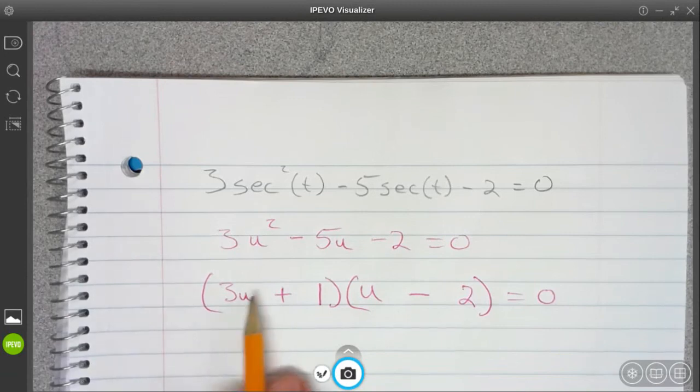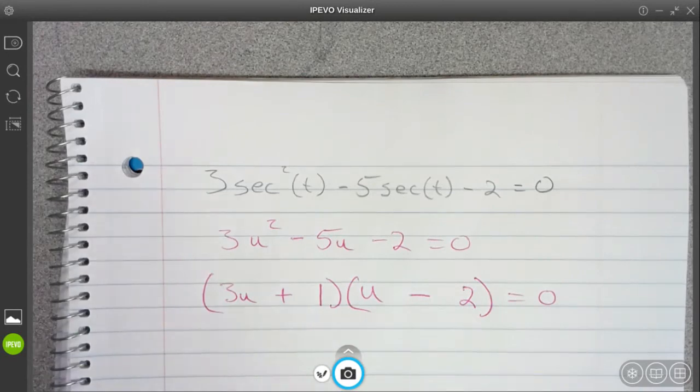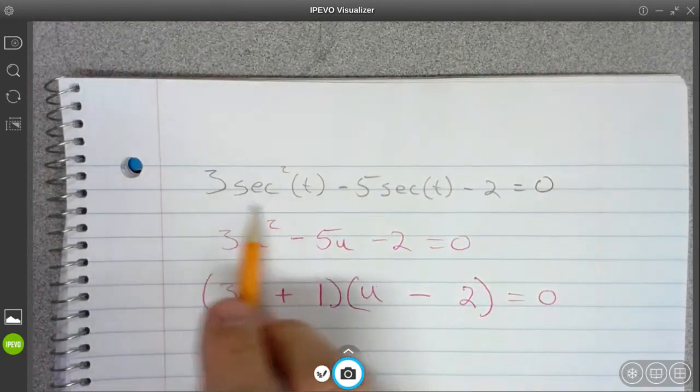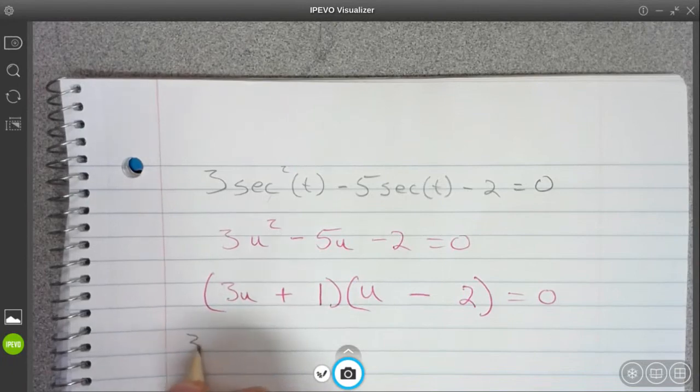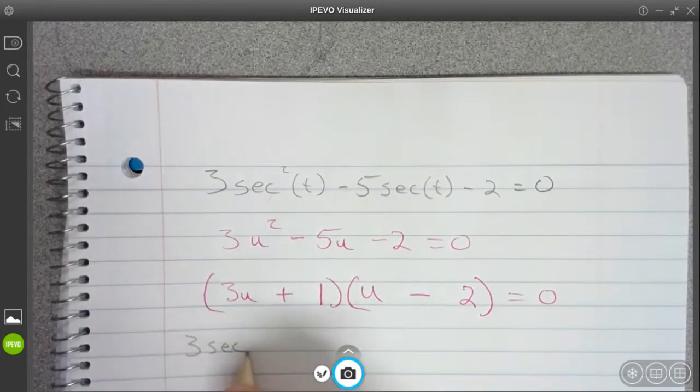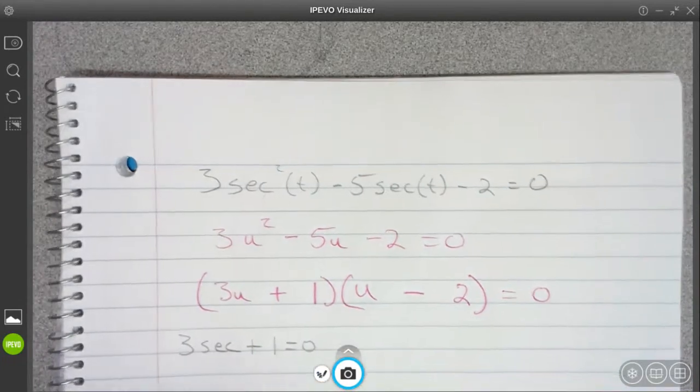All right, so now I'm going to take each of these factors and I'm going to set them equal to 0 and solve. I'm going to go ahead and put my secant back where it should be too. So I'm going to have 3 secant plus 1 equals 0.